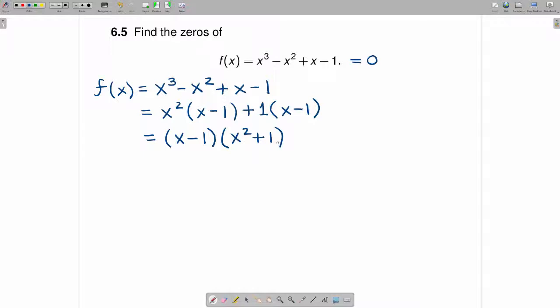Now if you think about it, this second term right here is the difference of two squares, and this will become (x - 1)(x - i)(x + i). Now that may not be obvious at first,